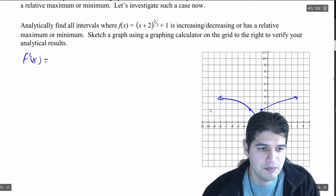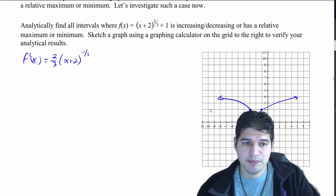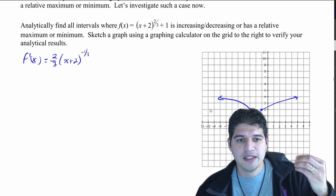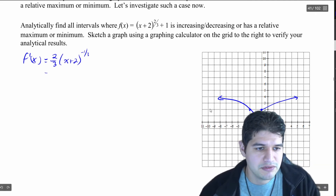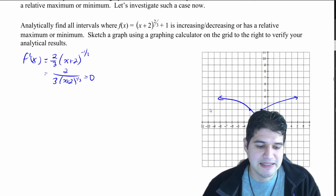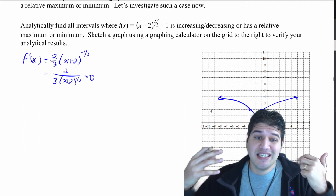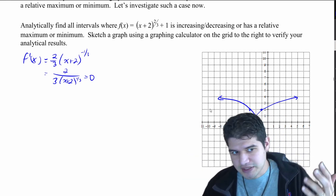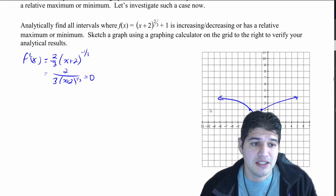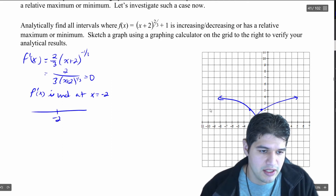Finding f prime: bring the two-thirds down, so we get two-thirds times x plus two to the negative one-third, multiplied by the derivative of the inside via the chain rule, which is one. The derivative of the constant plus one is zero. Rewriting: f prime equals two over three times x plus two to the positive one-third in the denominator. Setting this to zero — there are no x values where it equals zero, but we have division by zero when x equals negative two: negative two plus two is zero, cube root of zero is zero, giving two over zero, which is undefined. So f prime of x is undefined at x equals negative two.